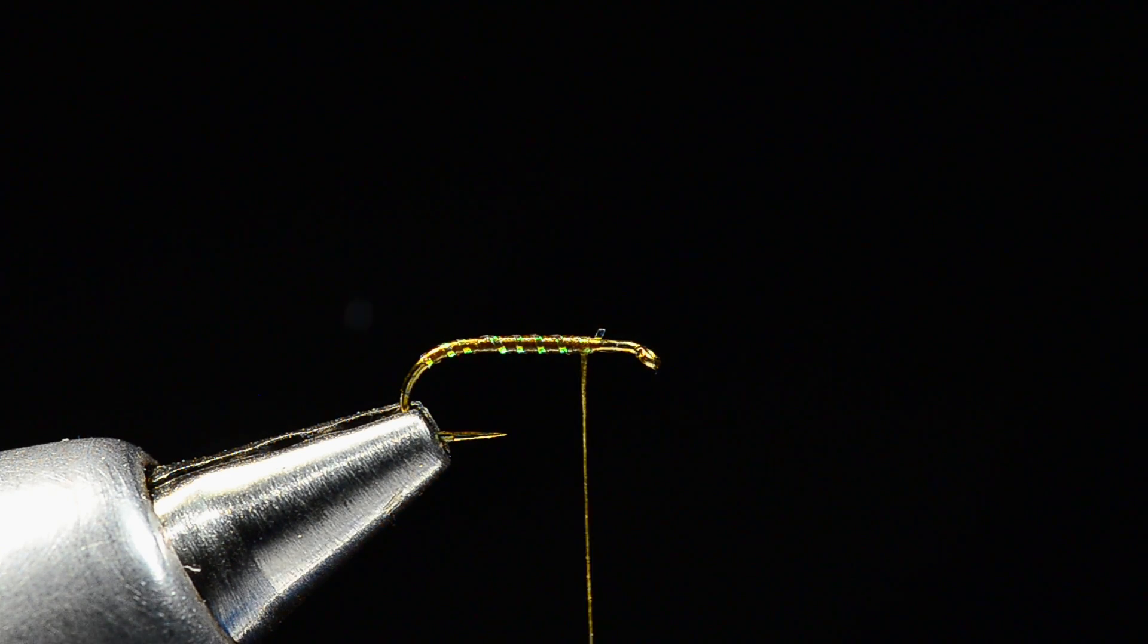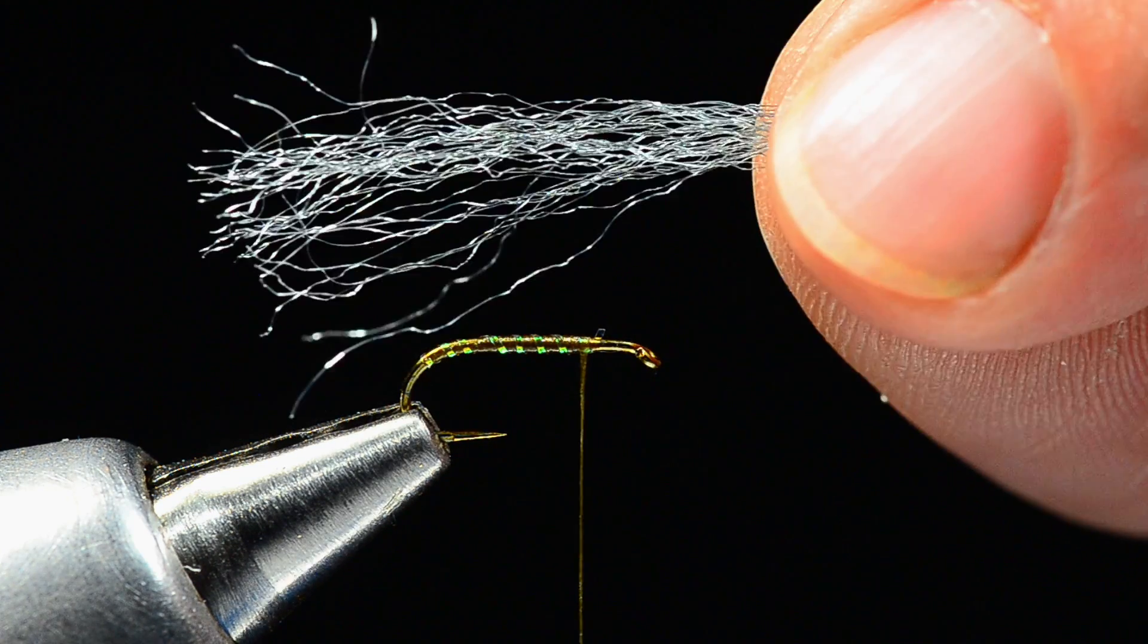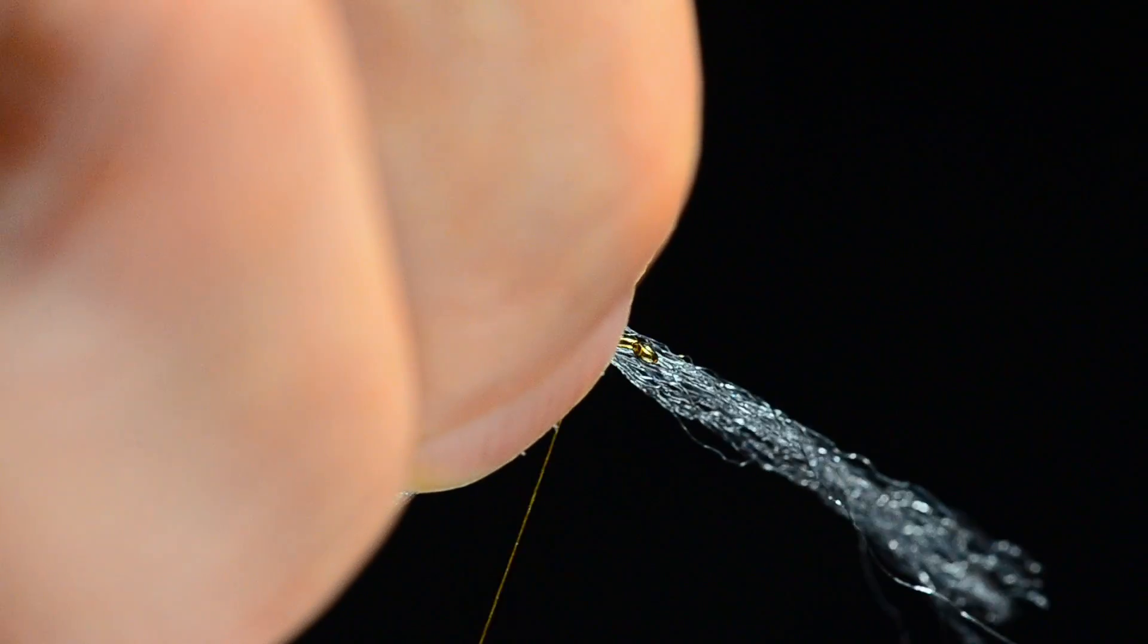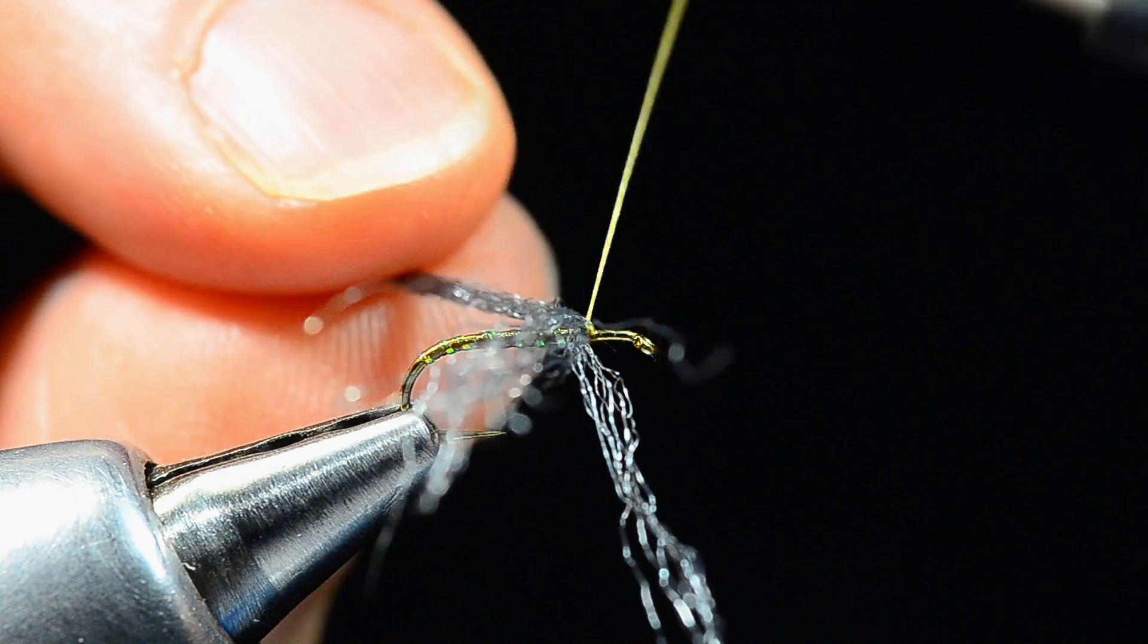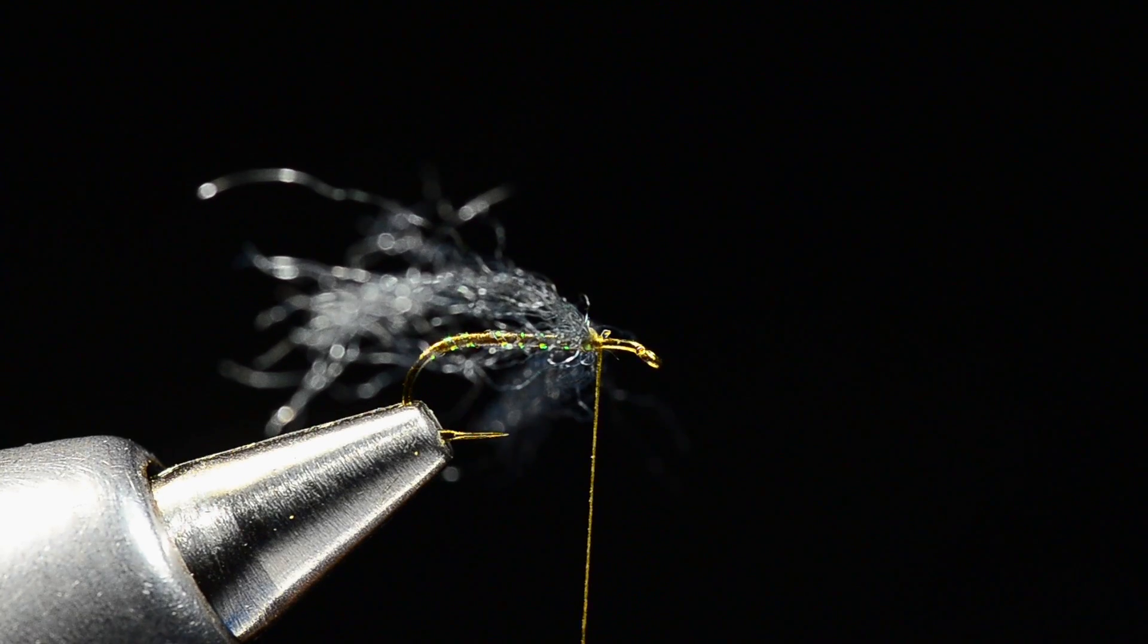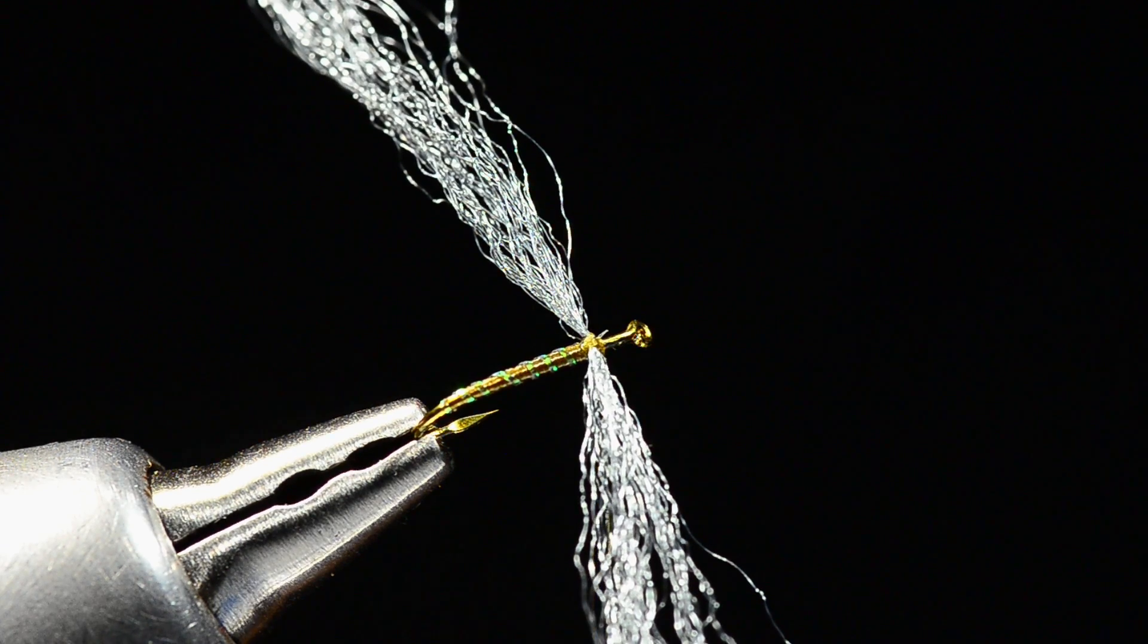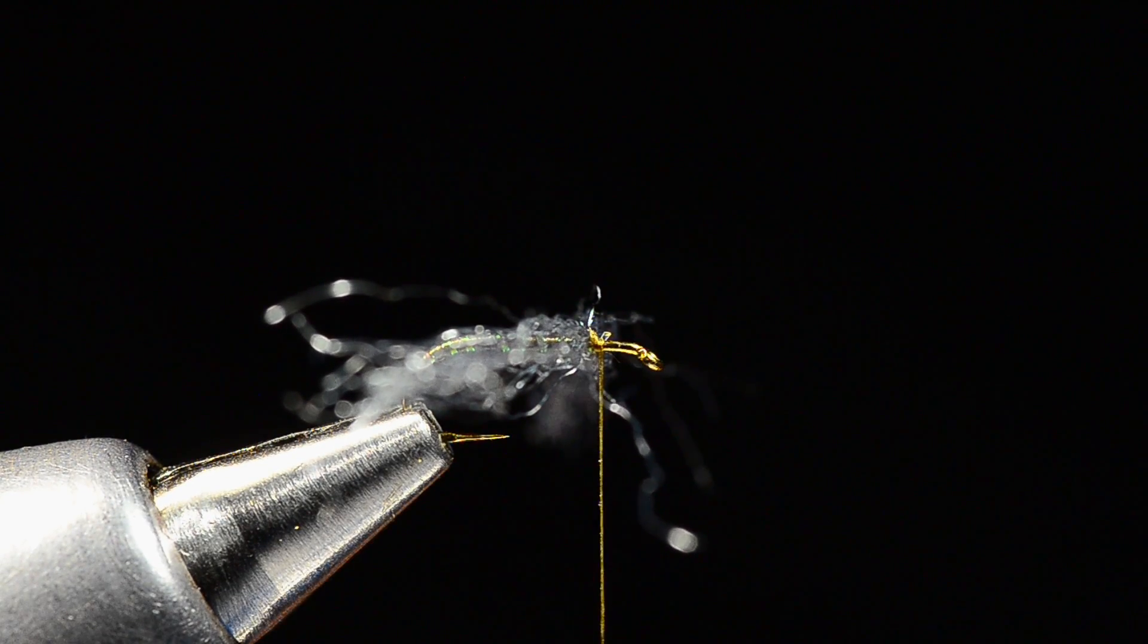Now for the spent wing I'm going to use this dun colored zelon, and you can use crinkle zelon or straight either one. I'm going to tie this in here at the front edge and I'm going to go a couple turns one direction and a couple turns the other direction. What that will give me is spent wings and I usually square my vise up and then just make sure that those are squared to the hook. I don't mind if they're canted back a bit, that's actually going to work to our advantage here in a minute.